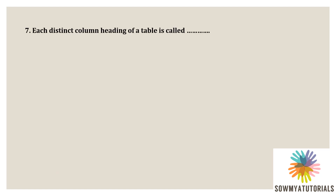Next question: each distinct column heading of a table is called what? Options are A) record, B) attribute, C) domain, D) tuple. The correct answer is B — attribute. Each distinct column is identified by a single distinct header, called an attribute, also known as a field.